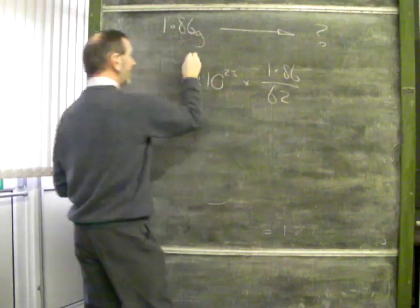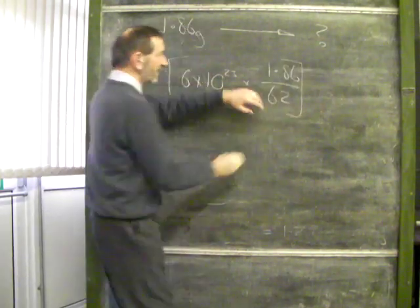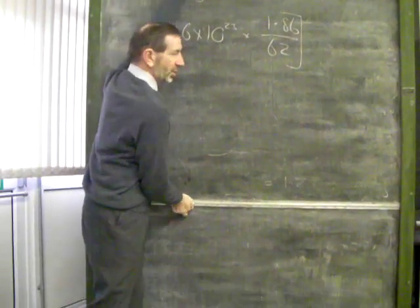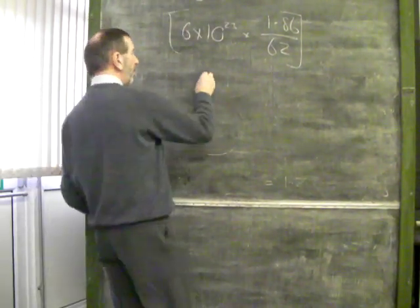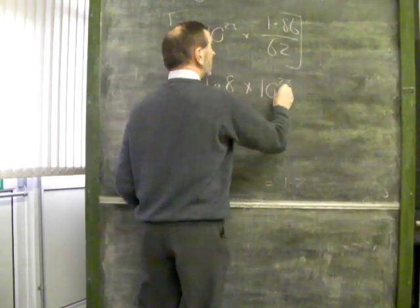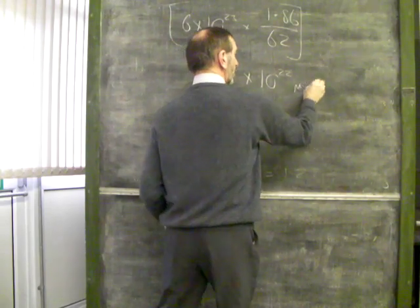So again, what we have here is a fraction of Avogadro's number. When we do the calculation, the answer comes to 1.8 times 10 to the power of 22 of these molecules.